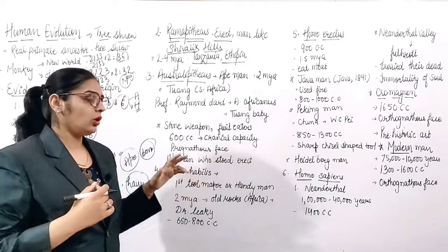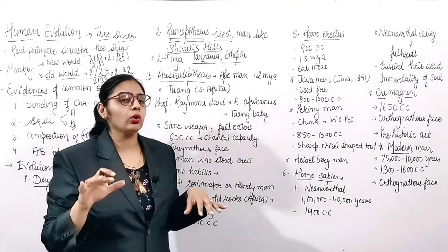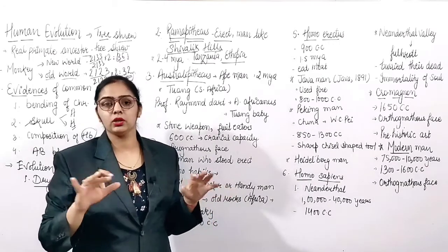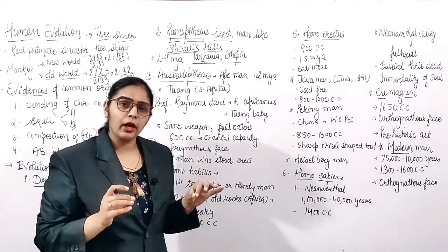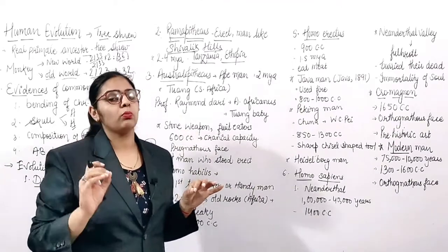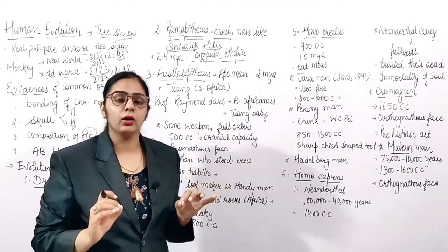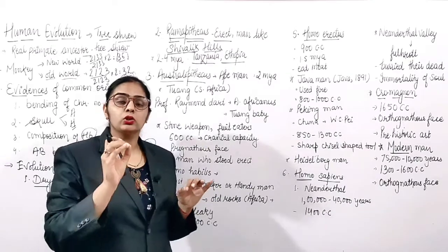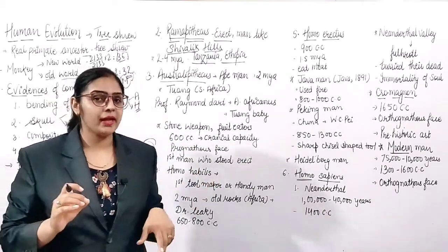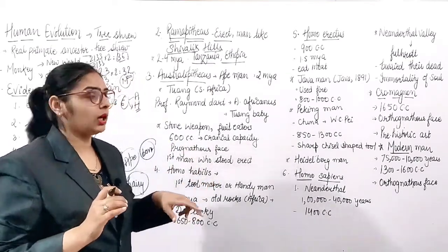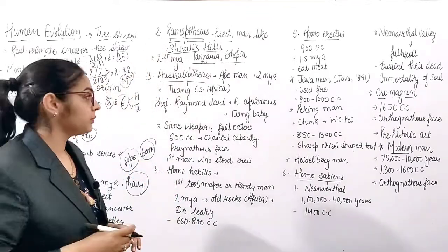Dryopithecus is the most common ancestor - the oldest and first ancestor of humans - and was more ape-like. If asked which was more man-like and slightly erect, that was Ramapithecus.